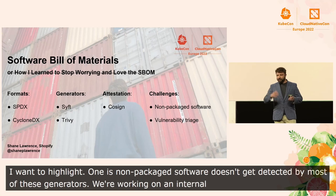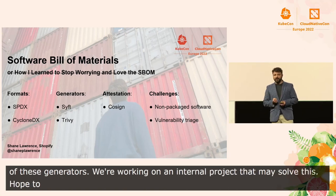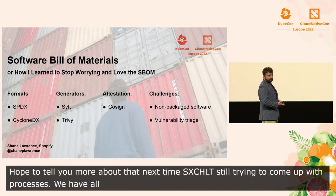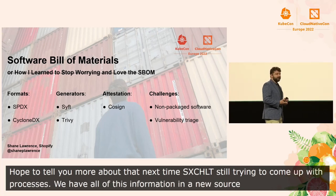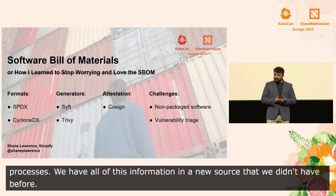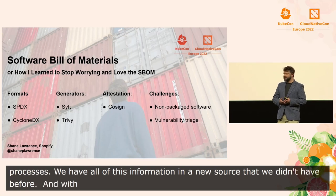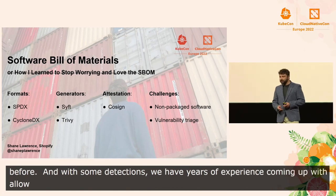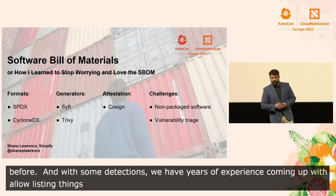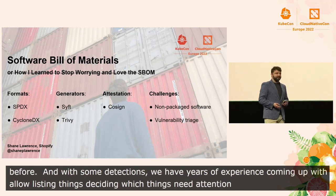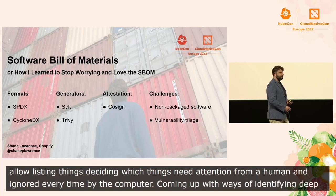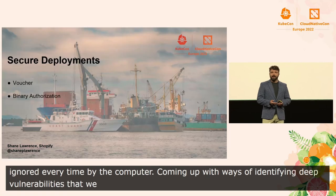We're still trying to come up with processes for vulnerability triage. We've got all of this information in a new source that we didn't have before. And with other kinds of events and detections, we have years of experience coming up with heuristics, allow-listing things, deciding which things need attention from a human and which can just be ignored by the computer. Coming up with ways of identifying deep vulnerabilities in dependencies of dependencies that we may not even be affected by is a problem we're hoping to solve with better processes now.